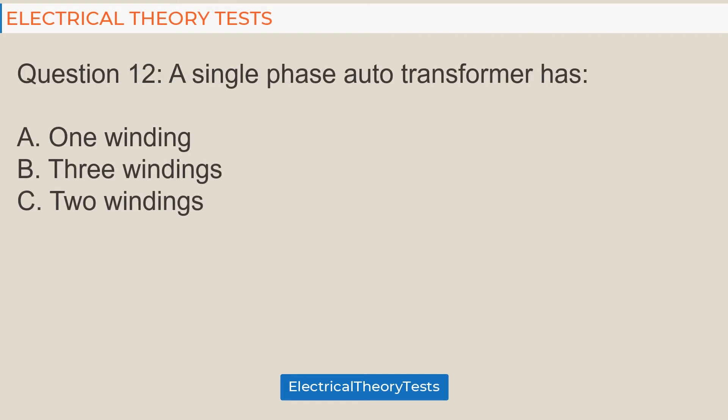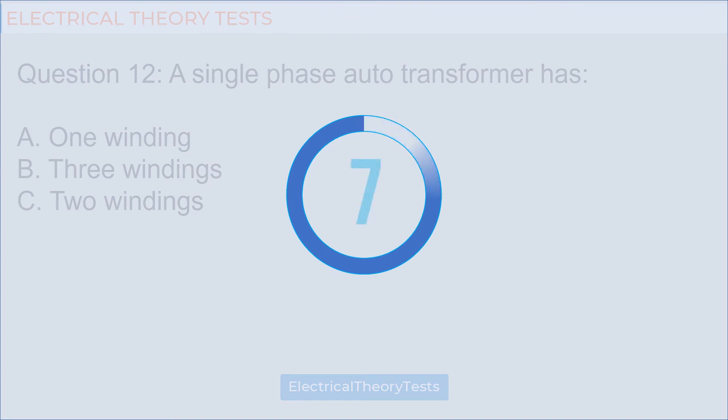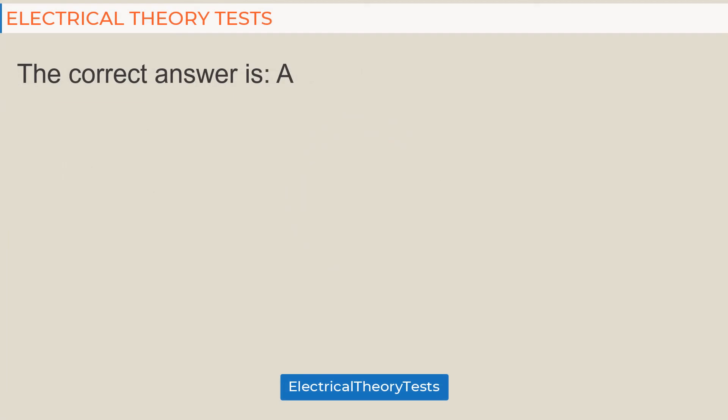Question 12: A single phase autotransformer has: A: One winding, B: Three windings, C: Two windings. The correct answer is A.